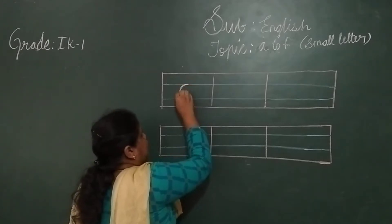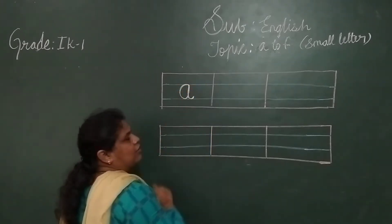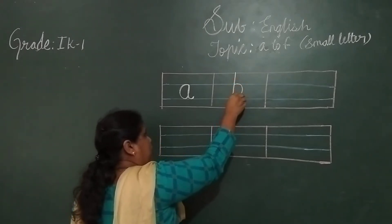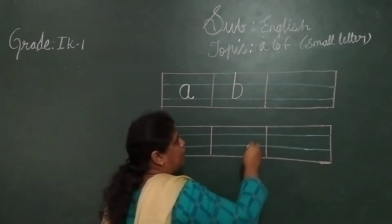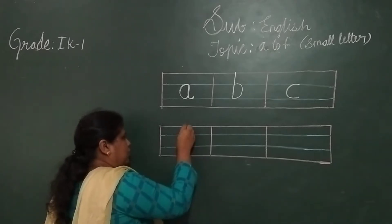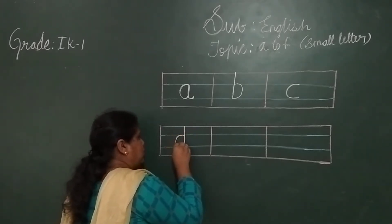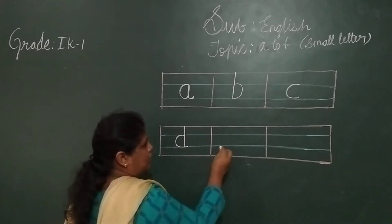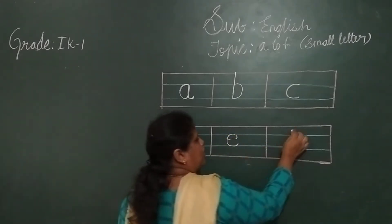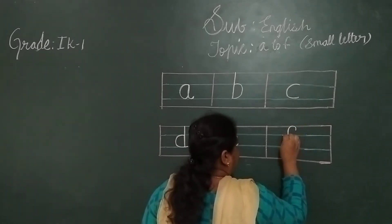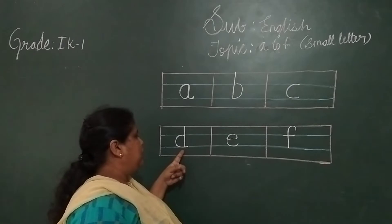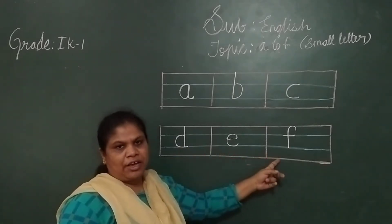See? Letter A. This is letter A. B. C. D. E. F. Okay? A, B, C, D, E, F. Okay?